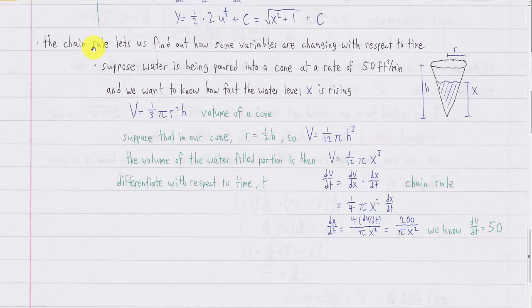We're going to be differentiating with respect to time in these problems. As an example, a common type of problem you'll see is water being poured into some type of container. So let's say we have a cone container, and water is being poured into the cone at a rate of 50 feet cubed per minute. We want to know how fast this water level, x, is rising.